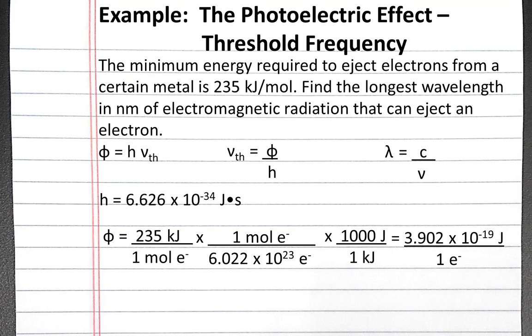If you plug this into your calculator, you should get 3.902 times 10 to the negative 19th joules per electron.